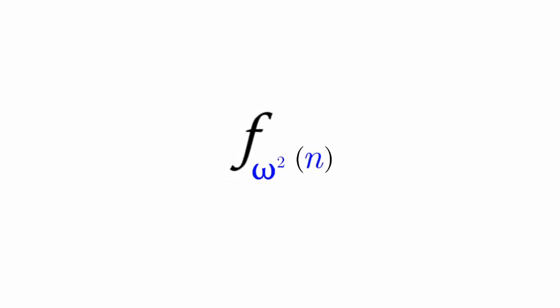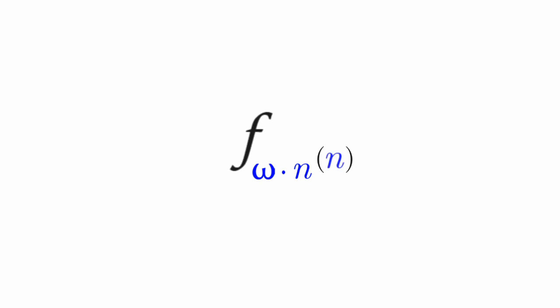Let's have F(omega²) of N. We turn omega squared into omega times omega, then we turn the closest omega to N, so we have F(omega × N) of N.